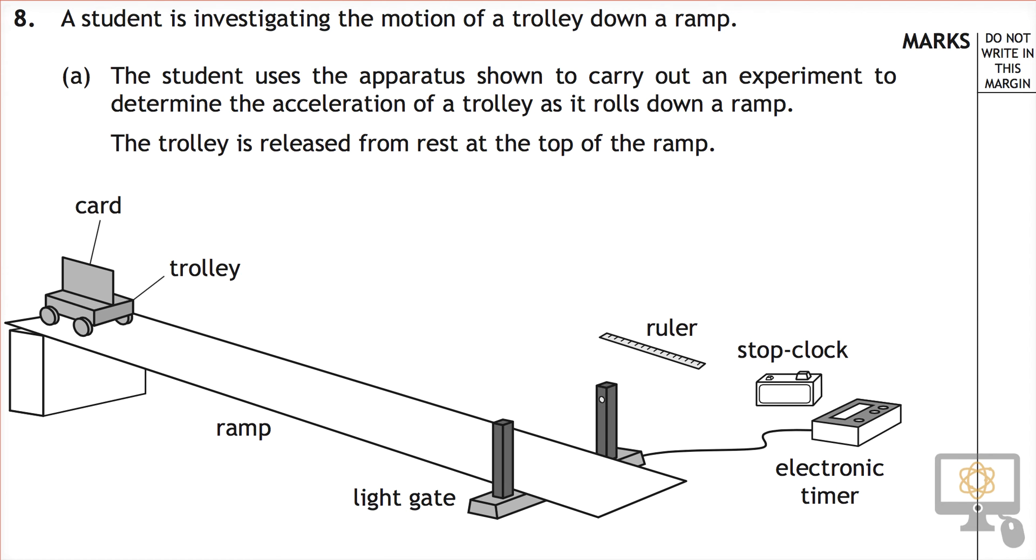Question 8A from the 2015 National 5 Physics paper. The question starts by saying a student is investigating the motion of a trolley down a ramp. The student uses the apparatus to carry out an experiment to determine the acceleration of the trolley as it rolls down the ramp, and the trolley is released from rest.